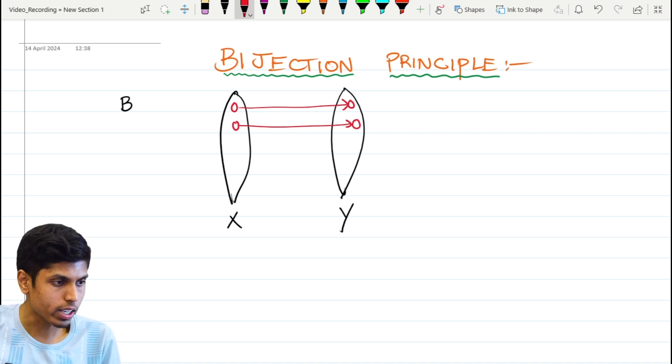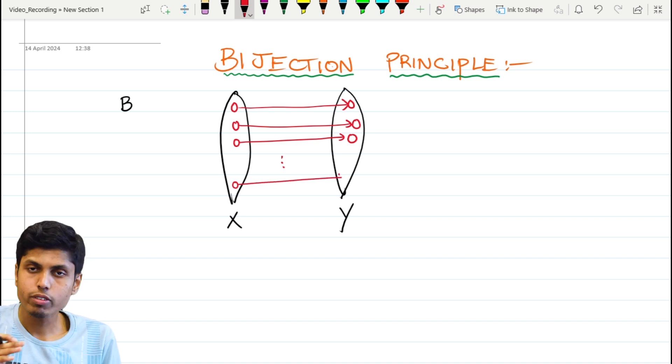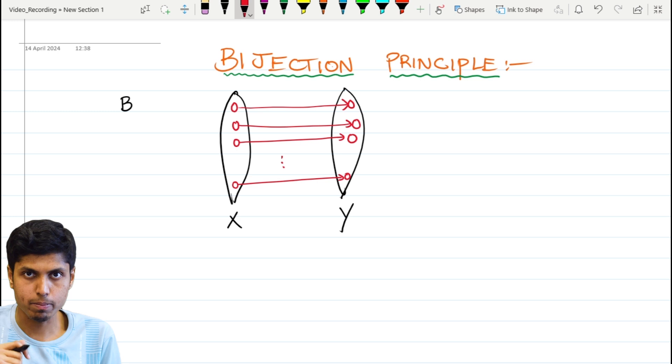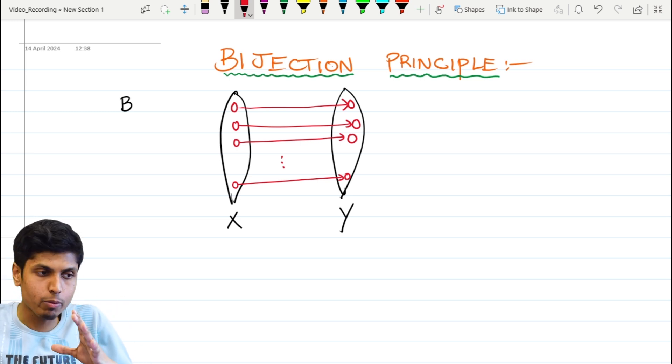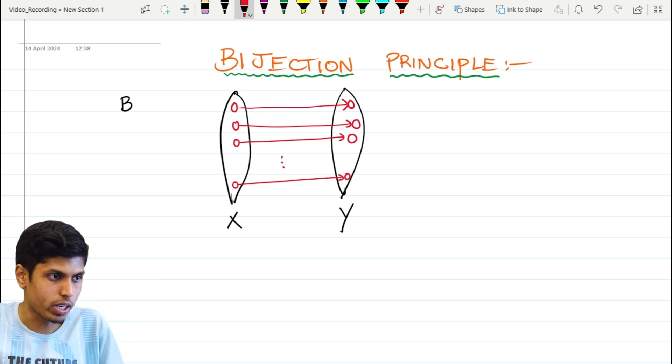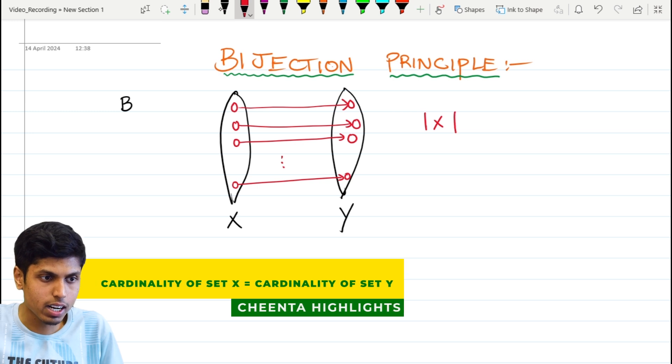Let me show you how bijective maps look like. Each element of X has a unique image in element of Y. We can clearly see that the number of elements in X is same as the number of elements in Y for such a map, because each has a one-to-one correspondence with an element of Y. This makes sure that the cardinality of set X is same as the cardinality of Y.